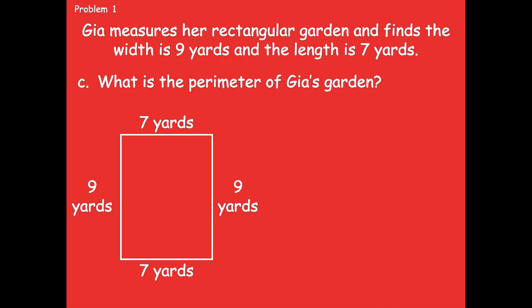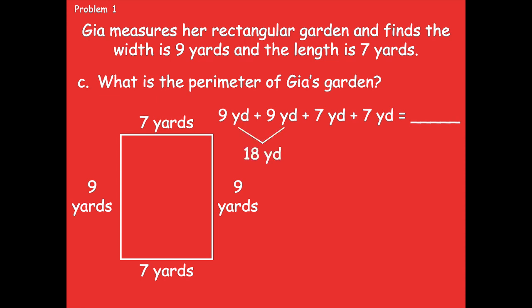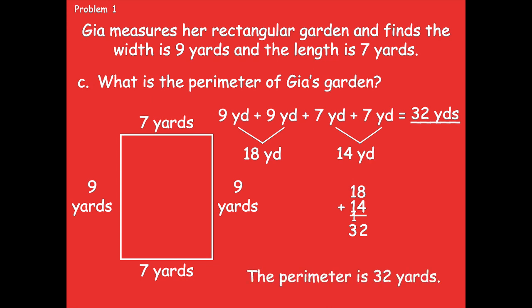All right, friends, pause if you need more time. Here's my equation: nine yards plus nine yards plus seven yards plus seven yards equals my unknown perimeter. I'm going to combine nine plus nine, which equals 18. Then I'm going to combine seven plus seven, which is 14. Then I have to combine both of those: 18 plus 14. Start in the ones place — eight plus four is 12, so that's two ones and one ten. Then I add my tens, which is three. So 32 yards is the perimeter. The perimeter is 32 yards.